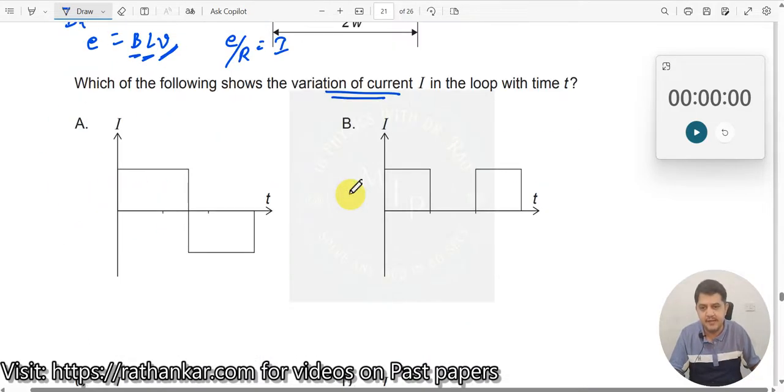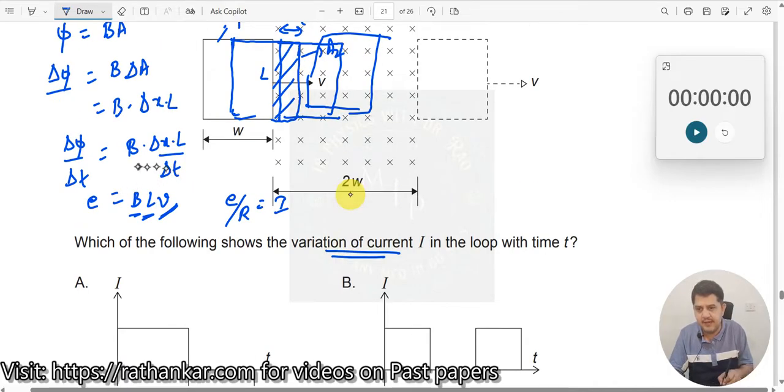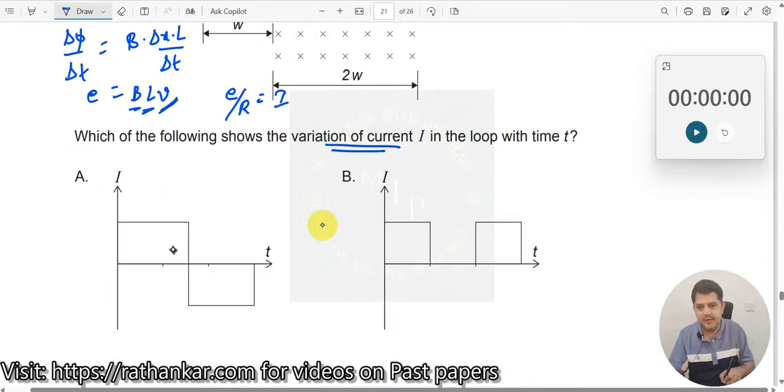When there is no change in the flux, delta phi by delta T is 0, E is 0, I is 0. That means current is not always present, but it has been present for some time and absent for some time. Here you see current is present over here and suddenly current reverses, but the current is never becoming 0 here. So therefore, this is incorrect.